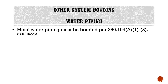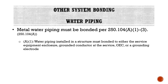For other system bonding, we look at water piping. Metal water piping must be bonded per 250.104 A1 through A3. Remember from our grounding electrodes lecture that metal water piping in direct contact with the earth for 10 feet can be used as a grounding electrode — but regardless of whether we use it as one, we still have to bond that metal water pipe. A1: water piping installed in a structure must be bonded to the service equipment enclosure, the grounded conductor at the service, the grounding electrode conductor, or a grounding electrode — essentially the grounding electrode system.